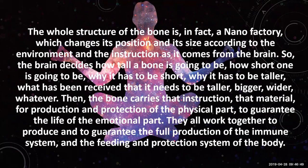So the whole structure of the bone is in effect a nanofactory. It changes its position and size according to the environment and the instructions coming from the brain. The brain decides how tall, short, wide or fat the bone is going to be — all to create the right magnetic gravitational field strength to attract certain fields from the lymph system, so that they can be used in the generation of our blood and immune system. Everything works together, and we can't view things in isolation anymore — every part that we do has an overall impact on our health.